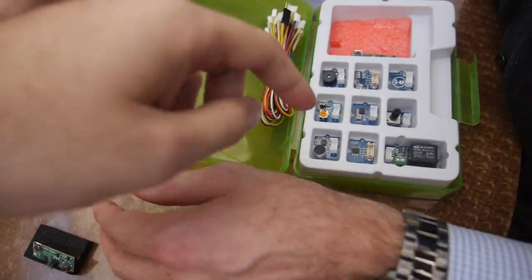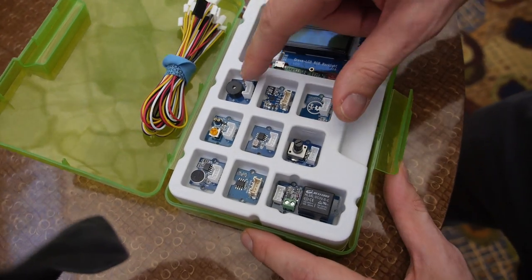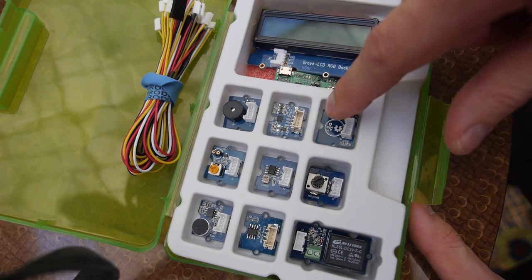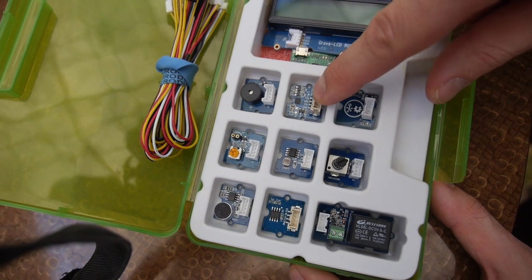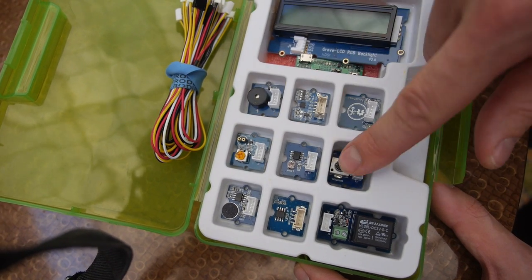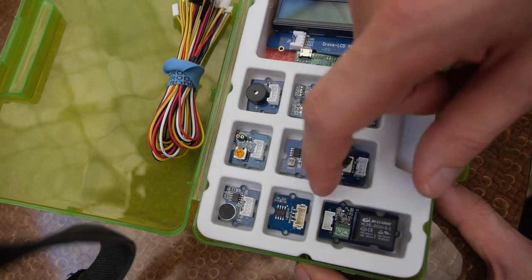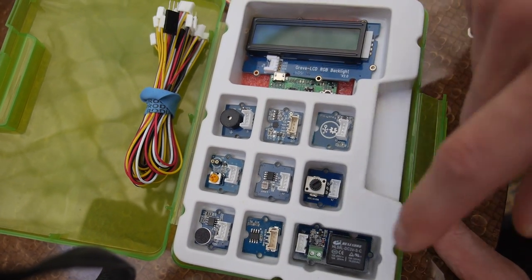What are all these different things there? Included in the kit, with this particular kit, we have a buzzer, we have an accelerometer, a touch sensor, a light sensor, LED potentiometer, sound sensor, and temperature sensor, and then a relay.